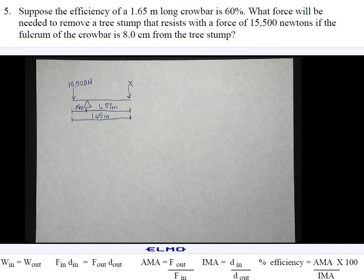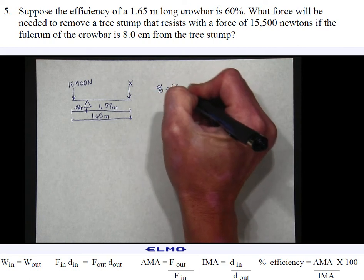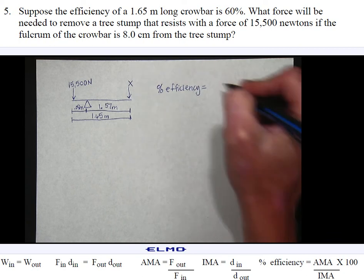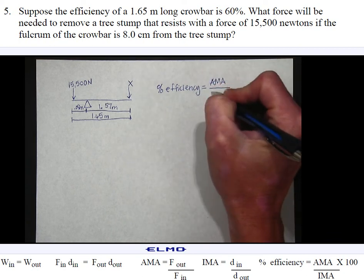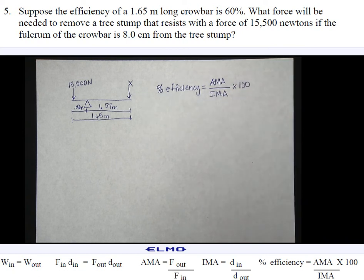Now they gave me this information of the bar is 60% efficient. So if you look at the bottom of your screen and find the formula for percent efficiency, you will see that it's equal to the actual mechanical advantage divided by the ideal mechanical advantage, then times 100. So since they mentioned efficiency, I'm going to start with the efficiency equation.